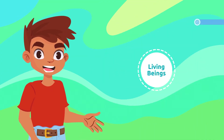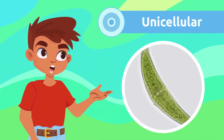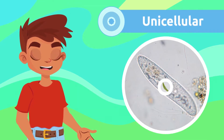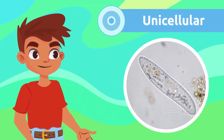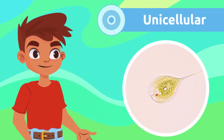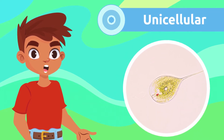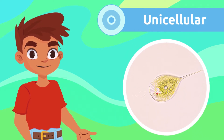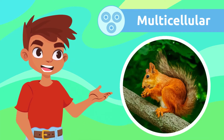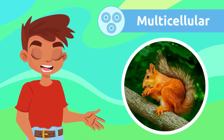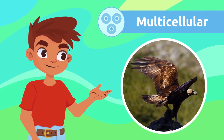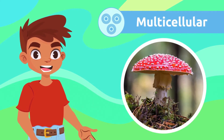Living beings can be unicellular organisms, meaning they consist of one single cell. Microorganisms, like bacteria, are unicellular organisms. Living beings can also be multicellular organisms, like trees or birds, that consist of many cells.